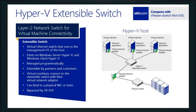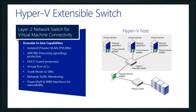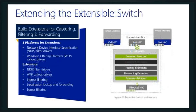What makes us different is how we approach the switch. We do bind to a physical NIC or a team, and we can bypass it if we're using SR-IOV. We can also put DHCP guard protection on adapters — designed to help protect against man-in-the-middle attacks. If somebody has a rogue DHCP server intercepting requests, this prevents that. We can also do network traffic monitoring and use PowerShell and WMI interfaces to do all kinds of things inside the switch.